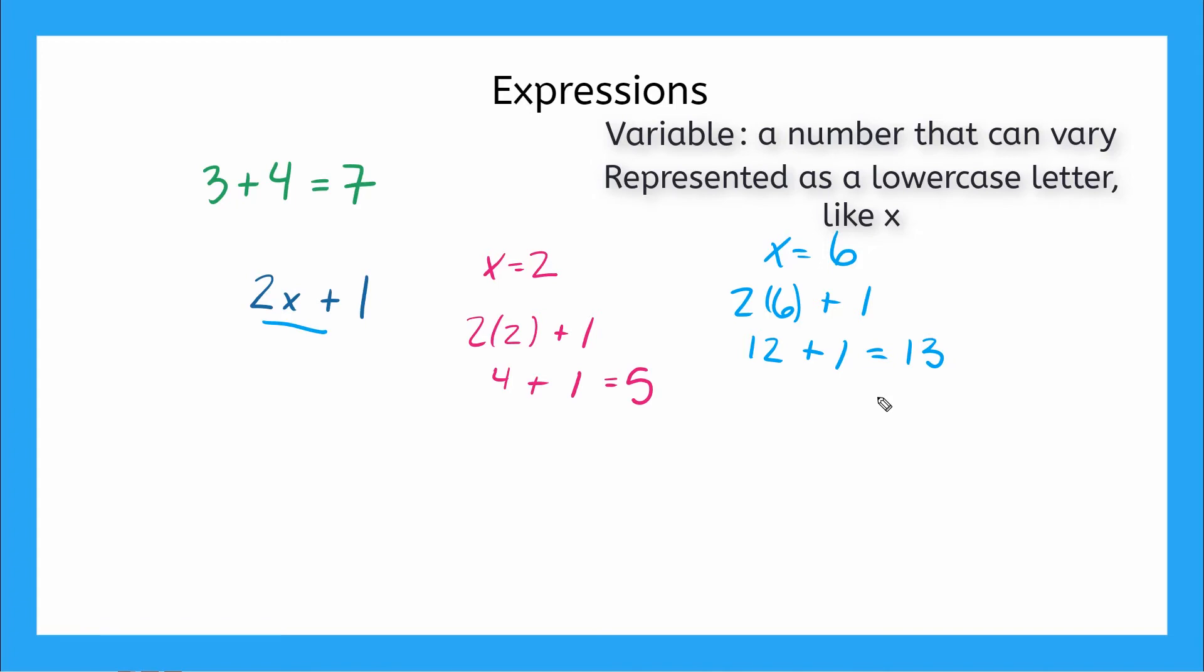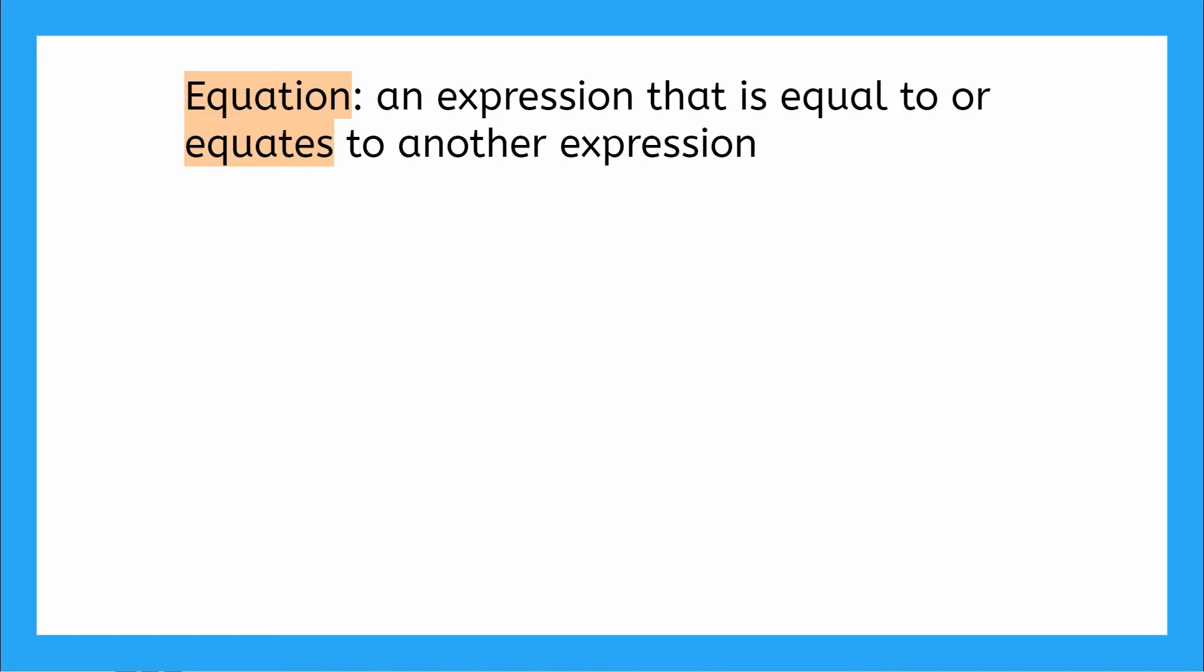That means it won't be too tricky when I tell you what an equation is. An equation is just one expression that is equal to or equates to, hence the name equation, another expression. For example, 2x plus 1 equals 7 is an equation. How come? Because we have an expression on one side, 2x plus 1, that's an expression, is equal to, that's what the equal sign means, another expression, 7.